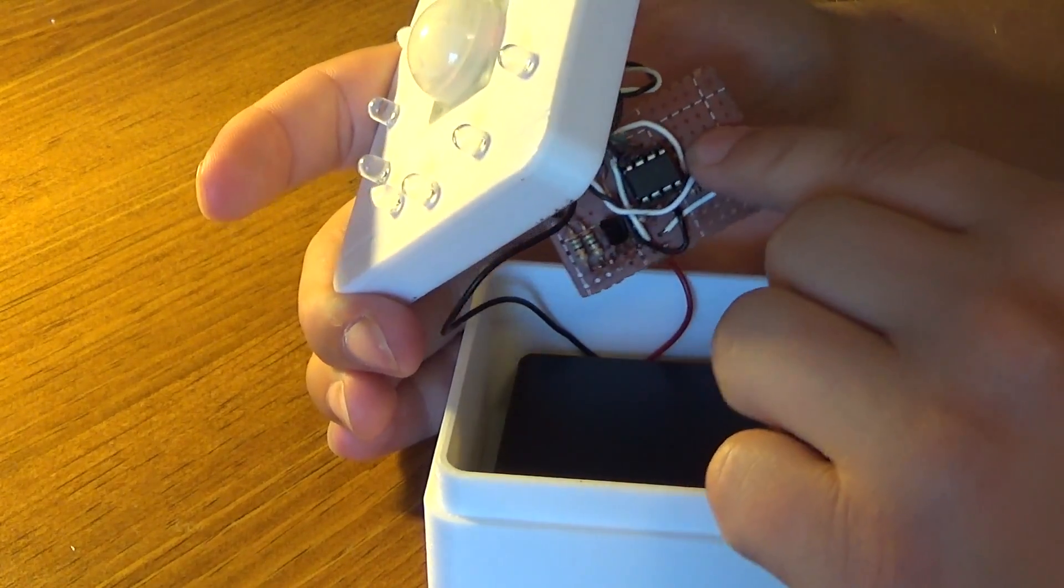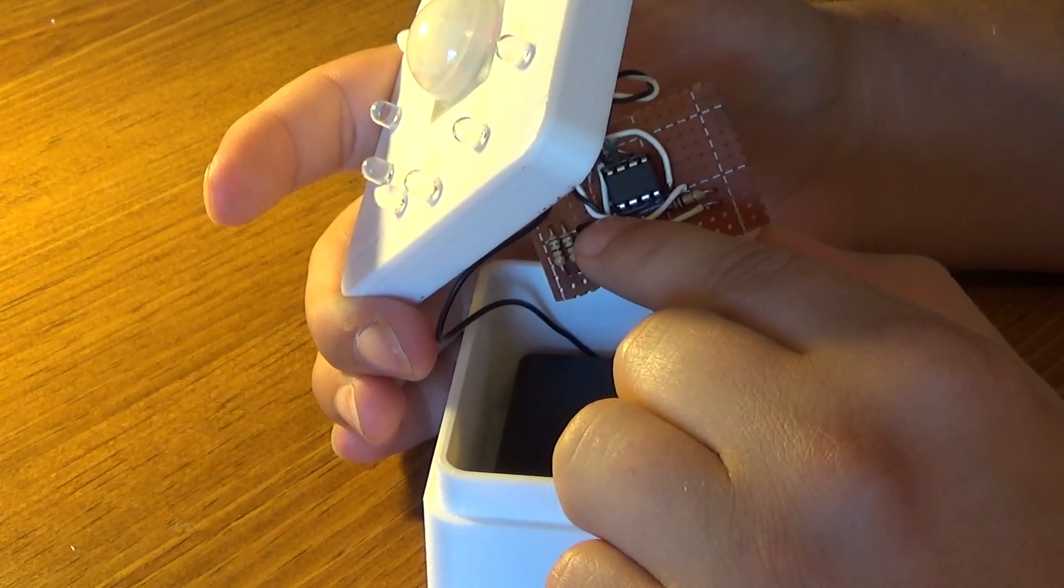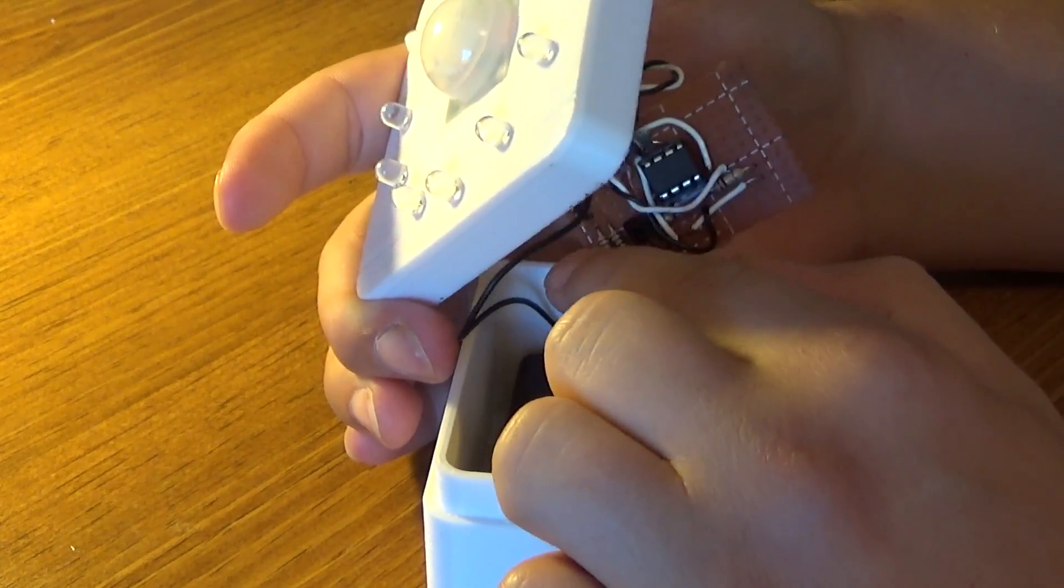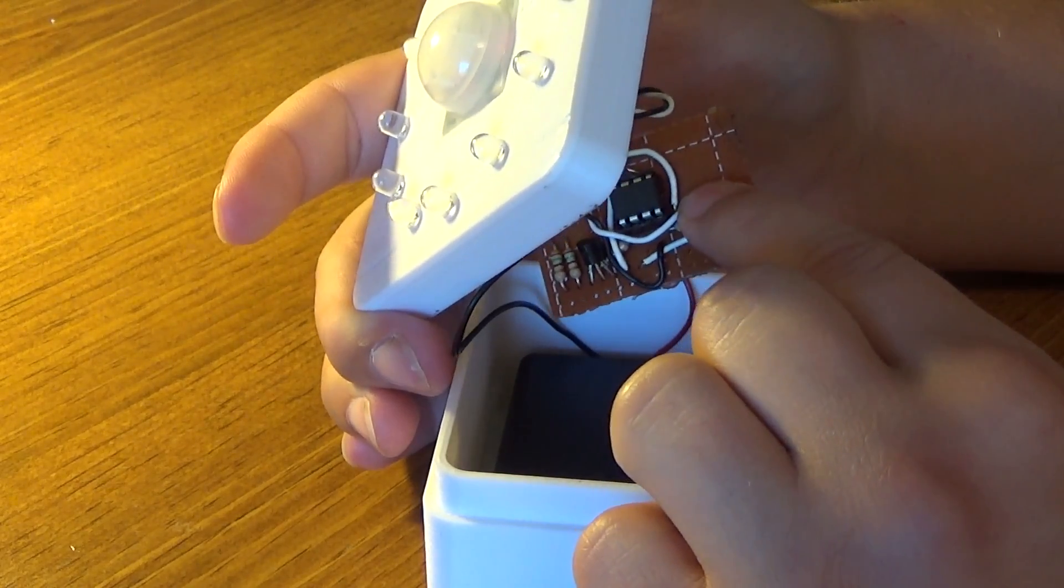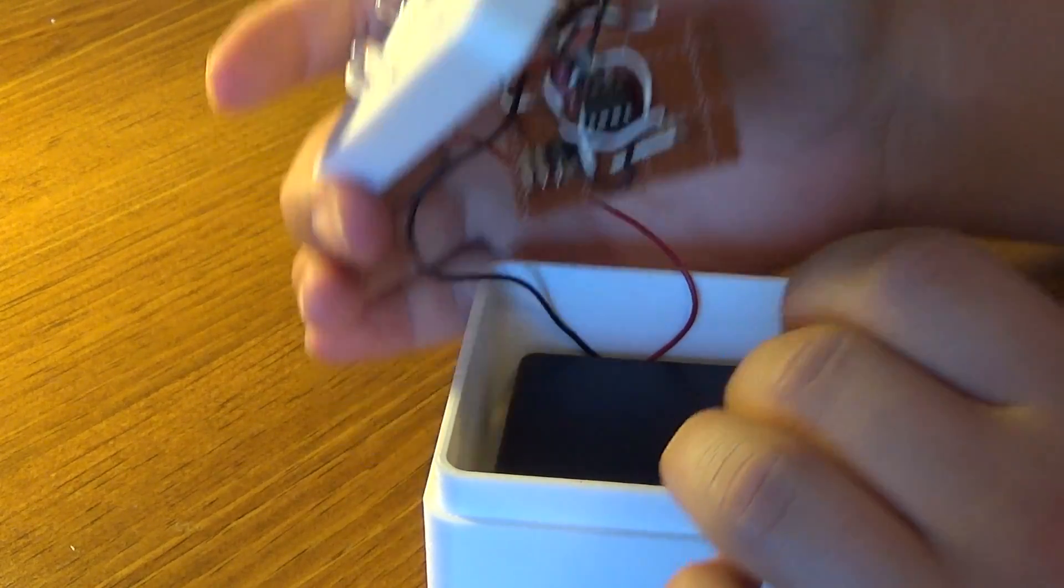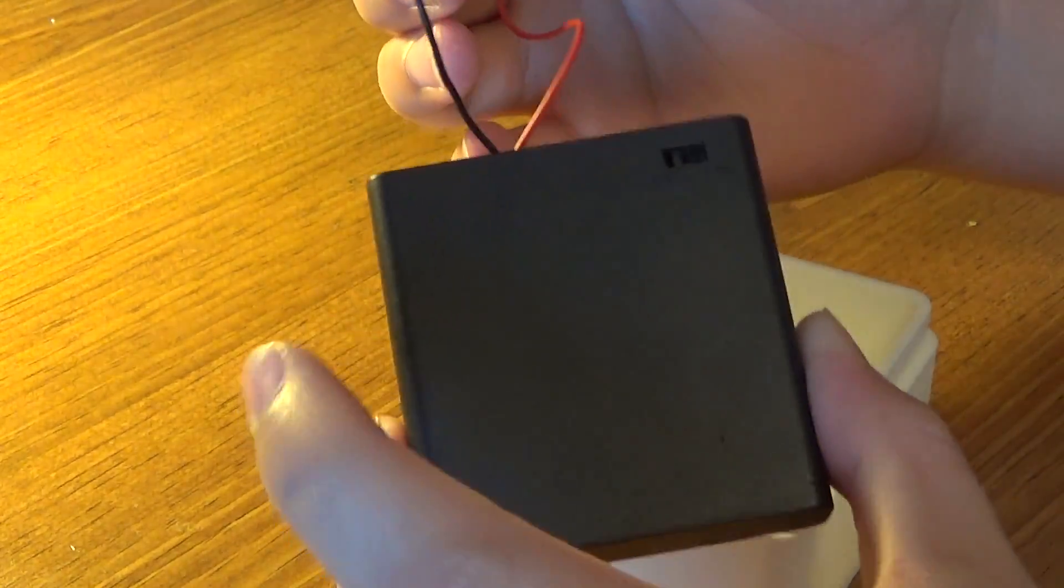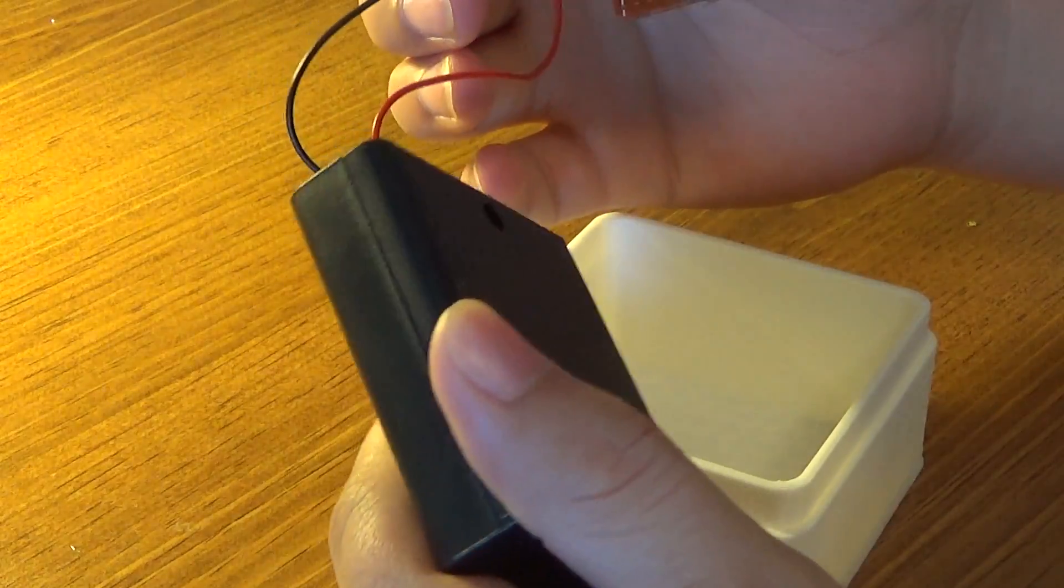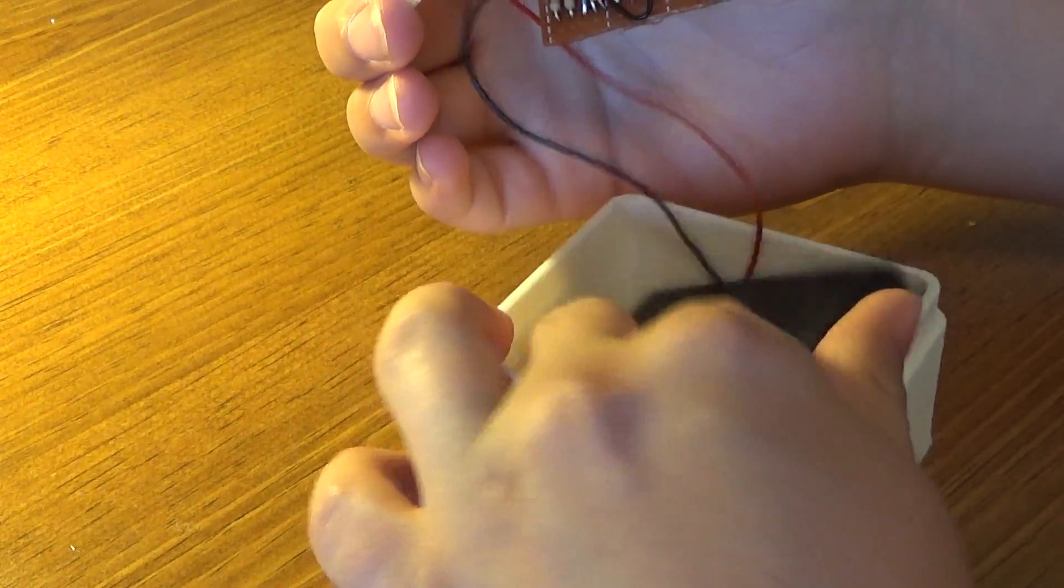But in here, this is pretty simple, we just got a transistor to switch the LEDs on and off. Resistors over here for the LEDs. This is a pull down resistor for that little CDS cell. And we have the battery box here which has its own on and off switch on it.